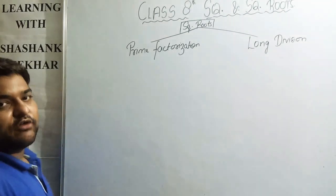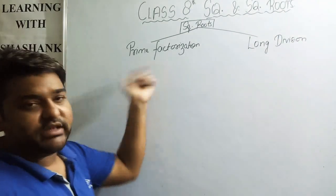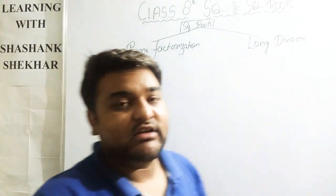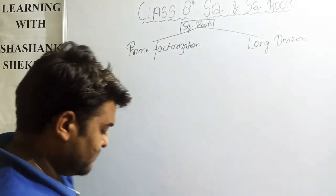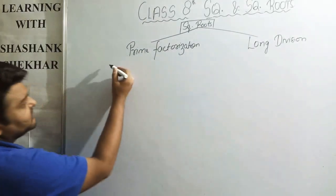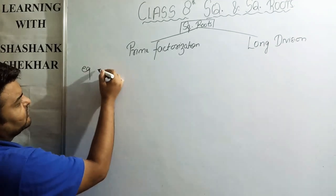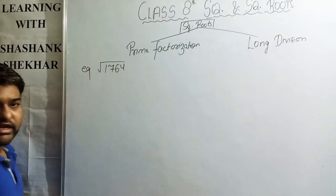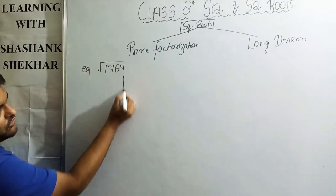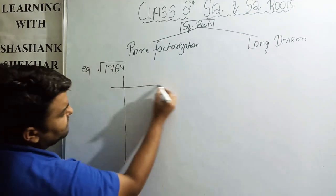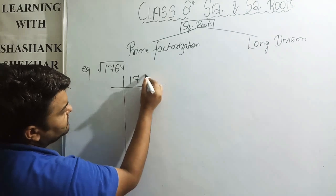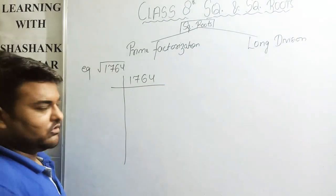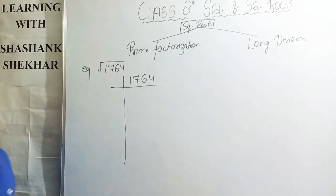I will take an example of the prime factorization method. In this method, you have to find the factors and make pairs. I will take the example of finding the square root of 1764. First of all, I will find the prime factors of 1764. The smallest prime number is 2, so I will start dividing 1764 by 2.